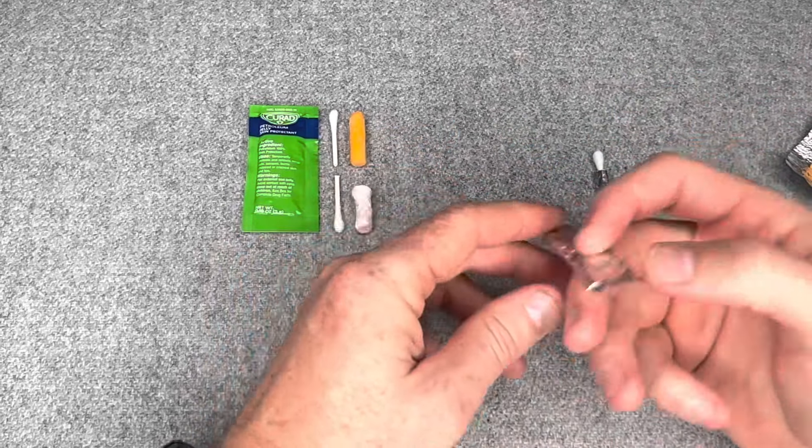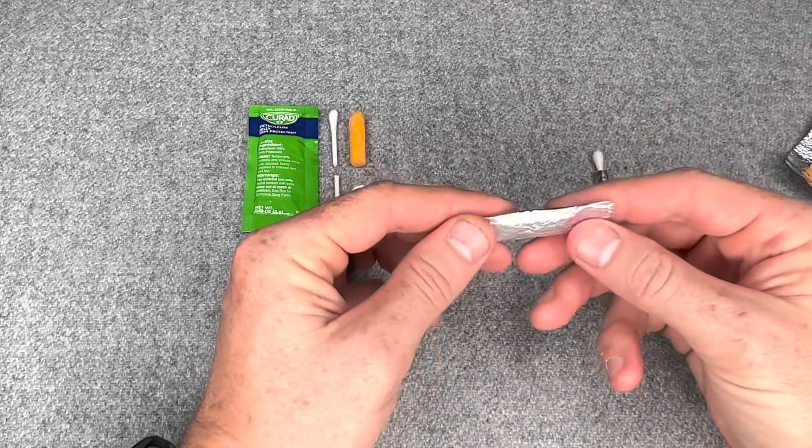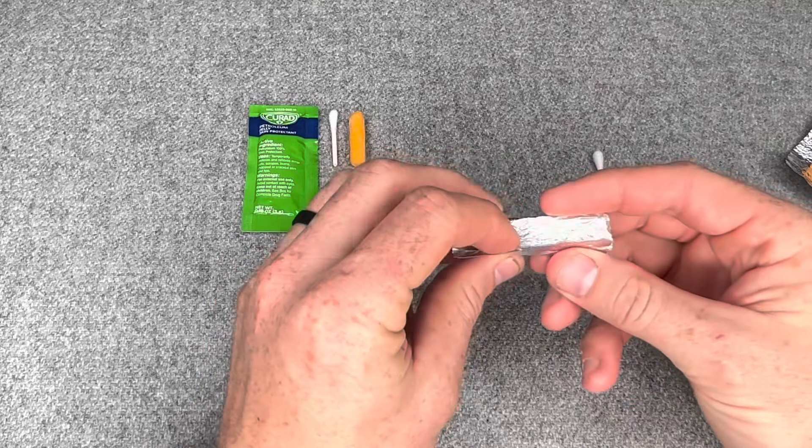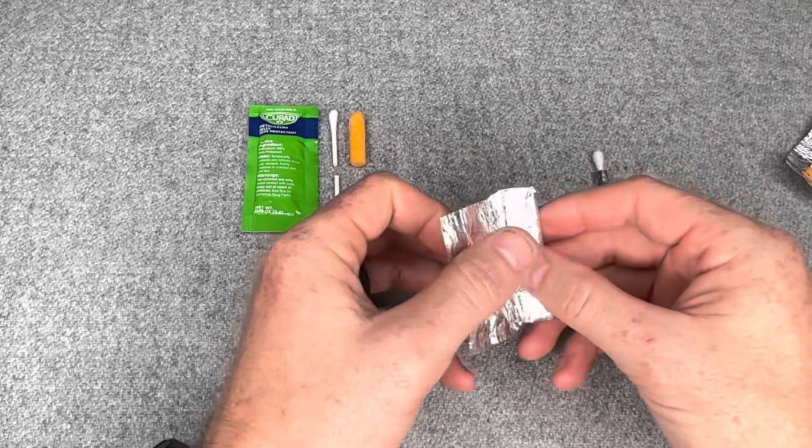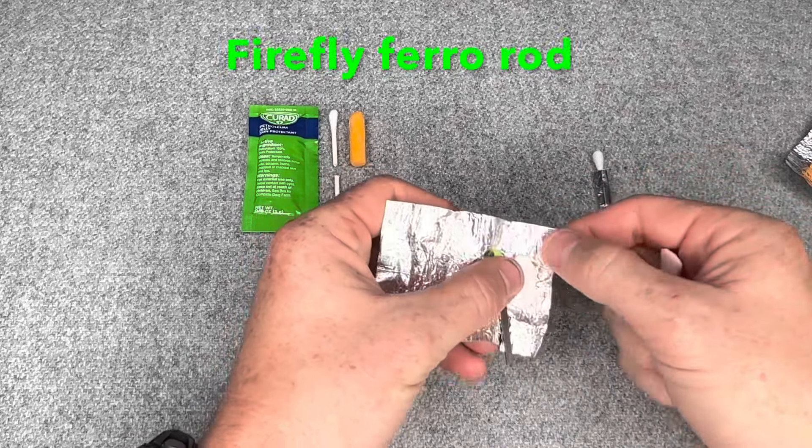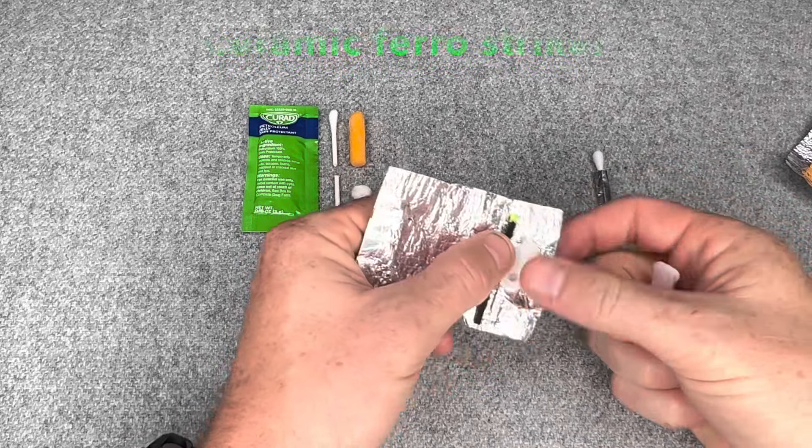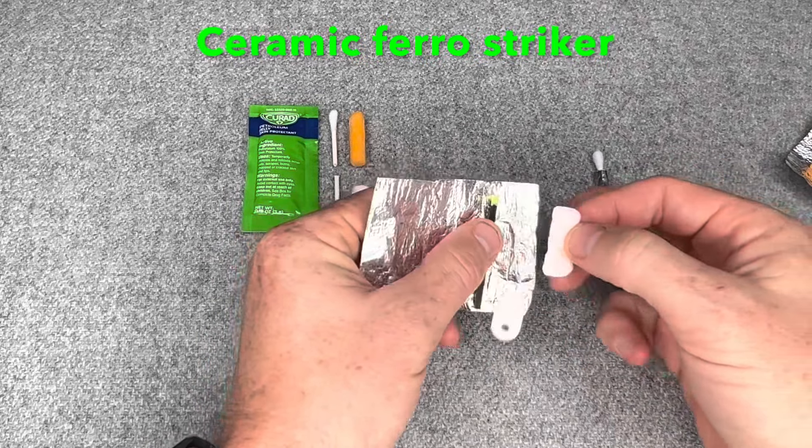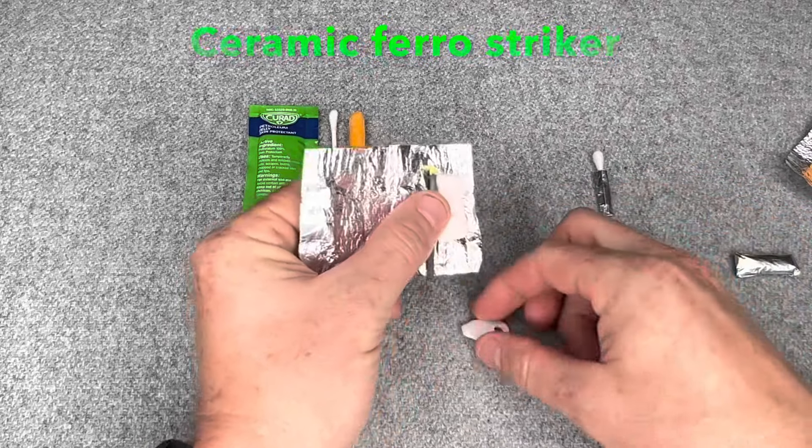And then this is just another option too. I'll go ahead and unroll this for you guys. Same concept, but it contains a tender wick, a little ferro rod made for a Swiss Army knife, and a ceramic striker. So really self-contained fire kit can make multiple fires.